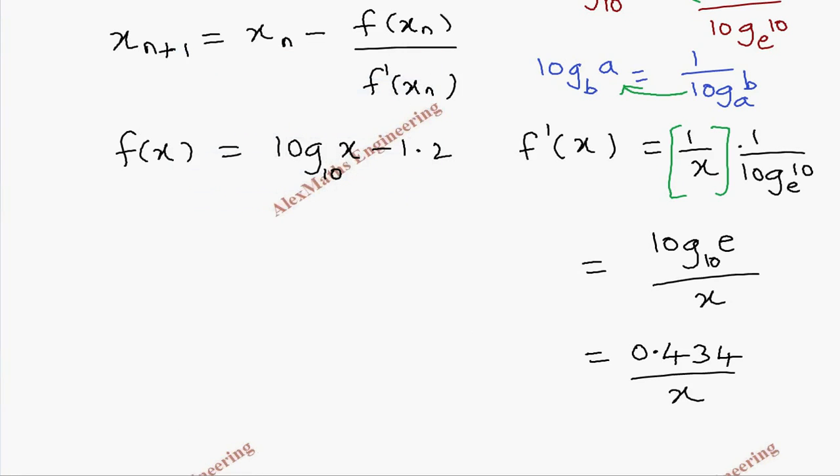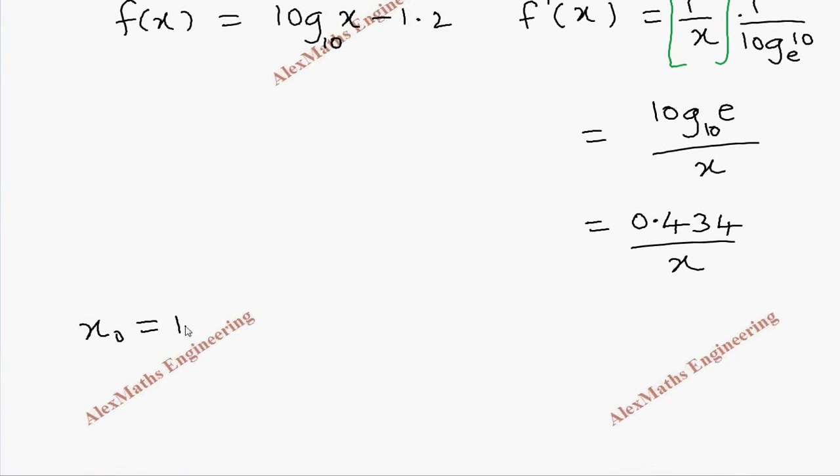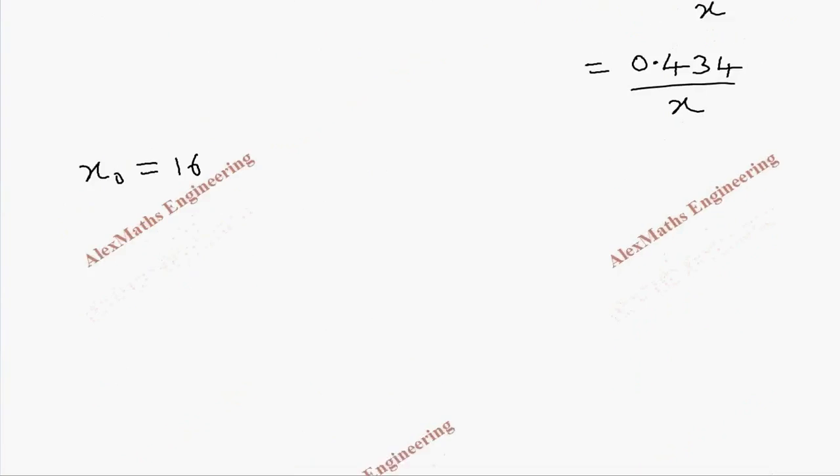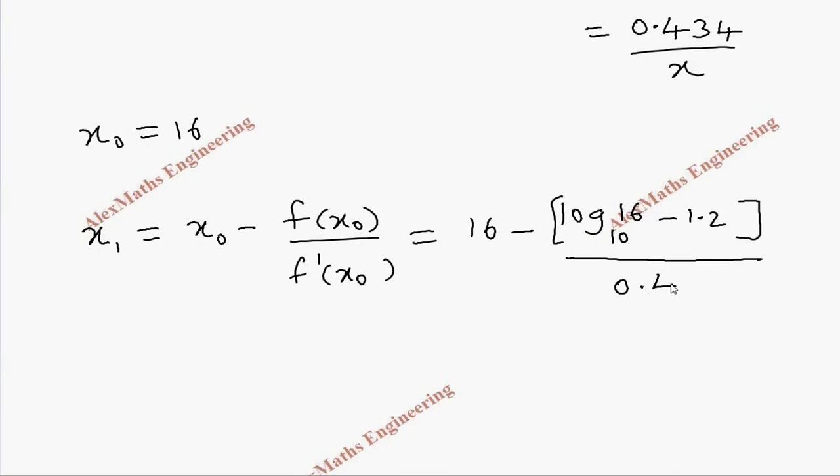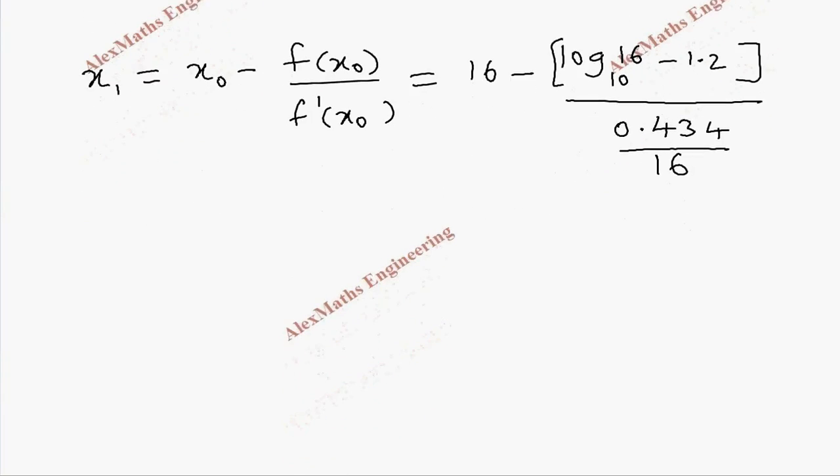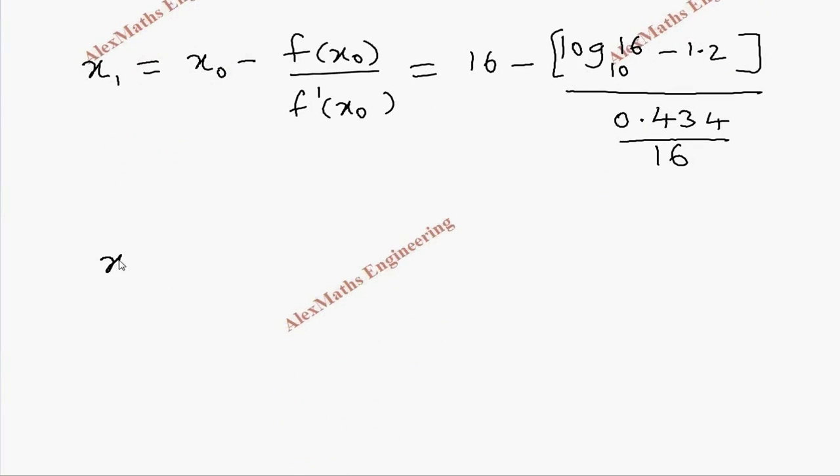Then after this, let's take x_0 as 16, because we found the closer value is 16. And let's find x_1. Now x_1 is x_0 minus f of x_0 divided by f dash of x_0. So this is 16 minus f of x_0 is log 16 base 10 minus 1.2 whole divided by its derivative. We got it here: 0.434 divided by 16.